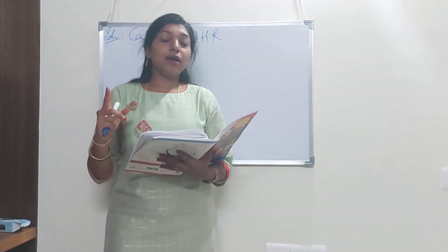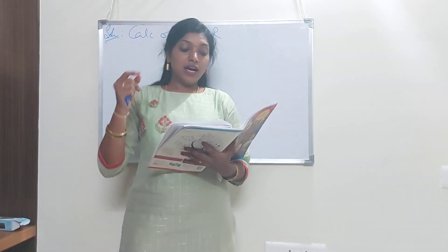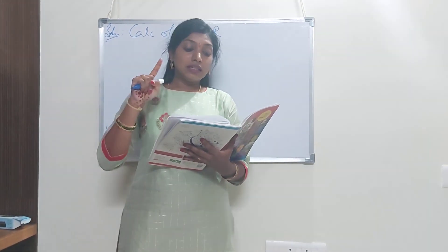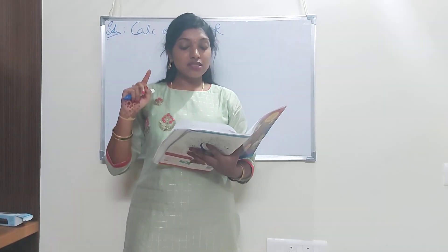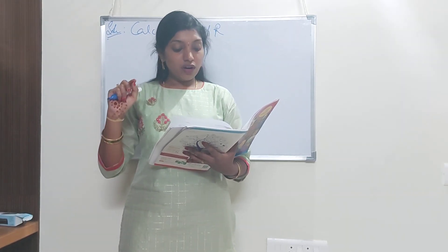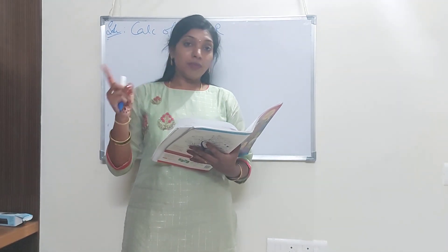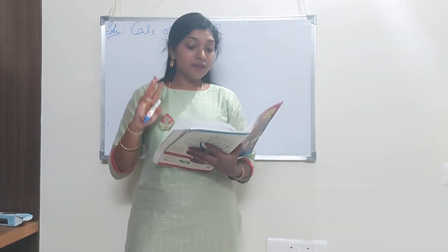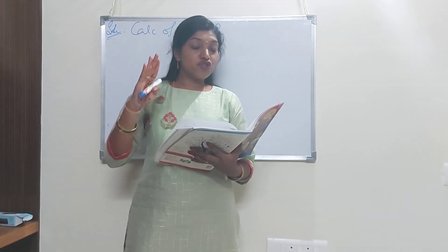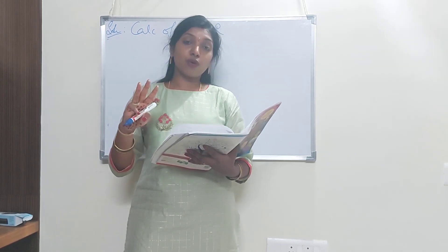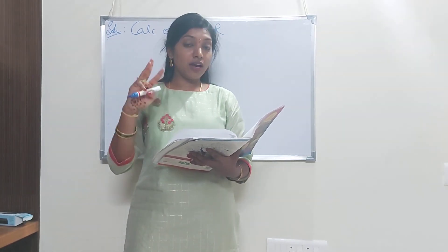This particular problem can be expected for section C. As far as your notes is concerned, this is problem number 3. From the following figures, compute machine hour rate for machines X, Y and Z for a 4-week period, which means it's on a monthly basis. Each machine is expected to work for 216 hours. So for 4 weeks, this particular machine is going to work for 216 hours. There are 3 machines: X, Y and Z.